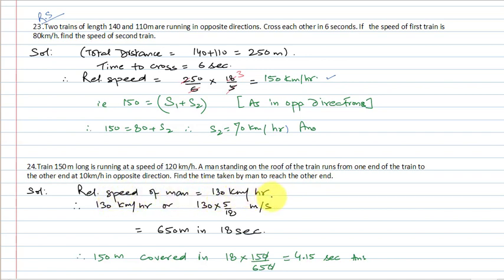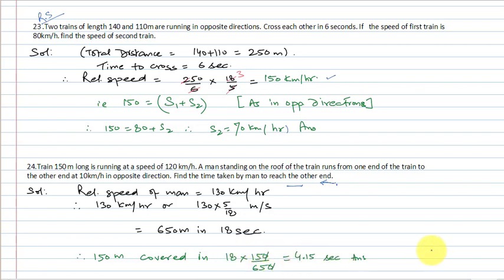Relative speed of man with respect to train = 120 + 10 = 130 km per hour (opposite directions, so speeds add). Converting: 130 × 5/18 = 650/18 m/s, meaning 650 meters in 18 seconds. Man needs to cover 150 meters. By unitary method: time = 18 × 150/650 = 4.15 seconds.